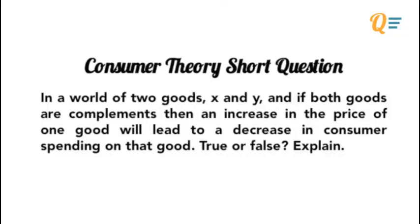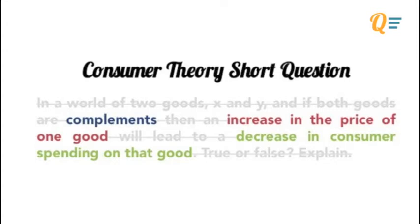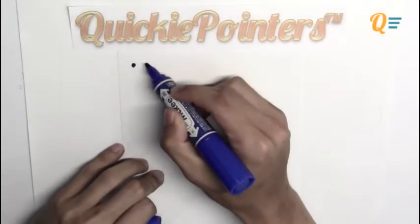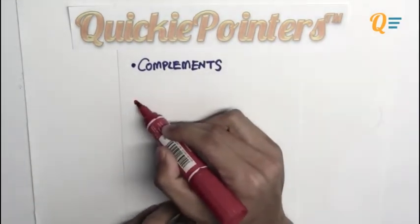In a world of two goods X and Y, if both goods are complements, then an increase in the price of one good will lead to a decrease in the consumer spending on that good. True or false? Explain. This is actually a very easy question to answer, so let's take a look at the quickie pointers. The first one is that X and Y are complements. The second is an increase in the price of one good — let's assume it is X. The question is: will an increase in the price of X cause a decrease in the consumer expenditure on X?